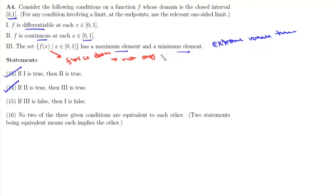So if the third statement is false, that means this function is not differentiable. If third is false then first is also false, that means statement 15 is also correct.